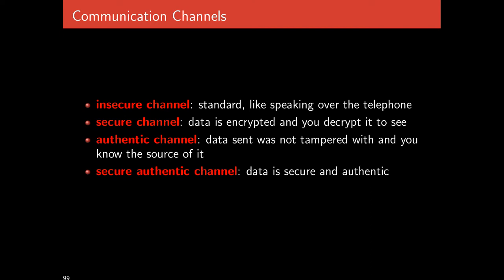To answer the question of how secret keys are initially arranged among communicating parties, it's useful to consider two dimensions for a communication channel. First, we have an insecure channel. This is missing the property of security and the property of authenticity. An insecure channel is the standard default — like speaking over the telephone or speaking in a room with other people. Anyone can listen.